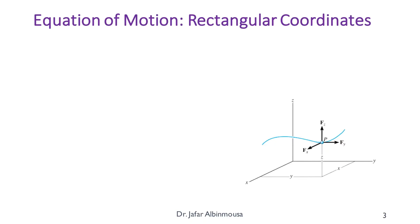If we assume there is a particle P moving along a general path and we would like to describe its motion using rectangular coordinates, we construct the coordinate system x, y, and z. We describe the position of the particle by its x, y, and z components. The forces acting on the particle are called Fz, Fy, and Fx — they are vectors — and from Newton's second law, the summation of forces equals mass multiplied by the acceleration vector.